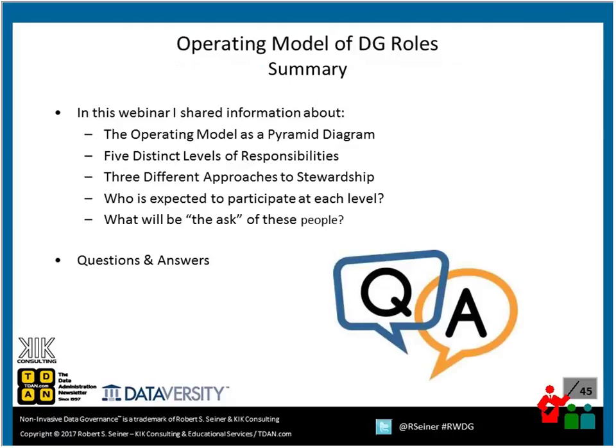In this webinar, I shared an operating model as a pyramid diagram with five distinct levels of responsibility — executive, strategic, tactical, operational, and support. We talked about three different approaches to stewardship: command and control, traditional, and non-invasive. We discussed who is expected to participate at each level and what we will ask of them in terms of time and engagement as we roll out our data governance program.